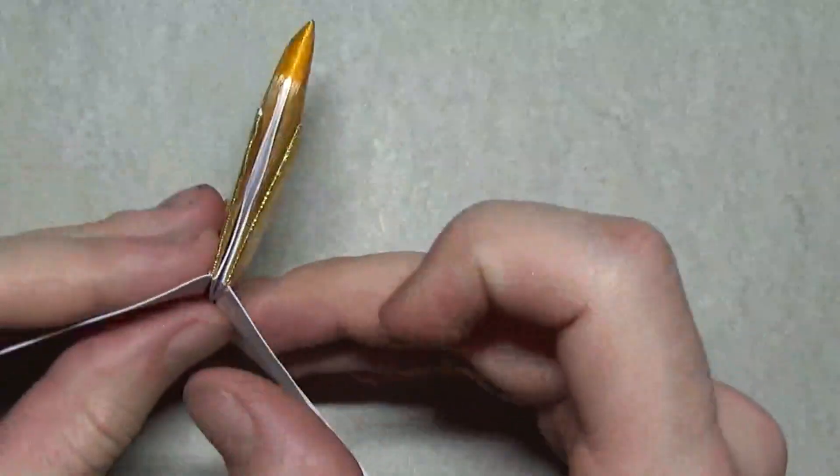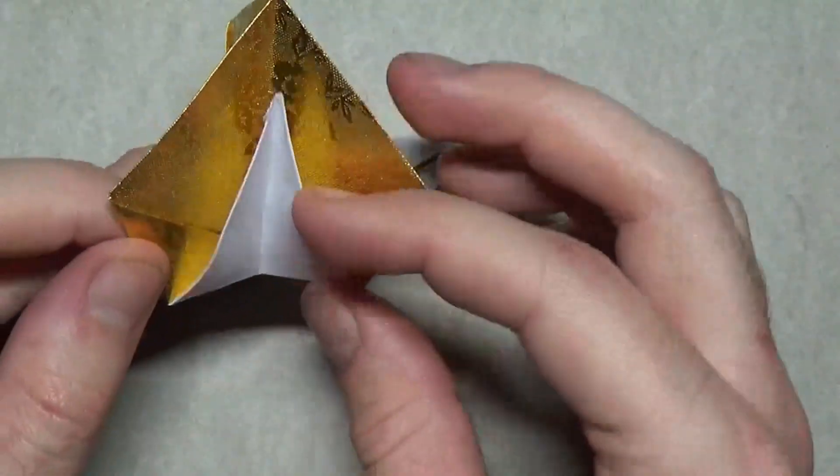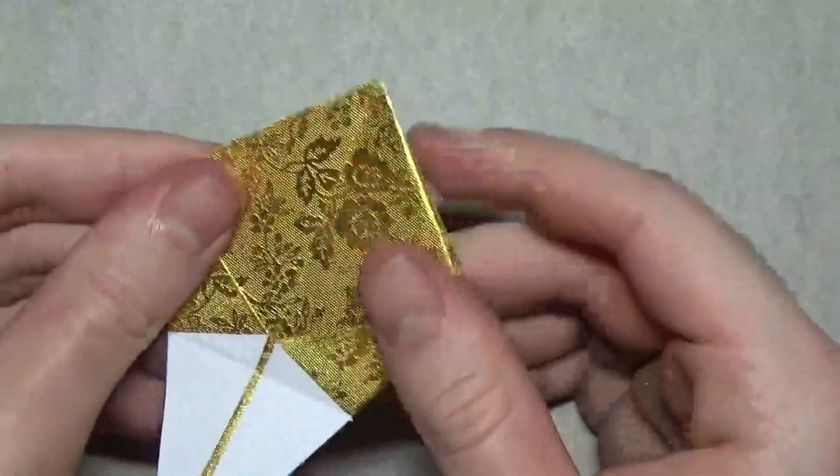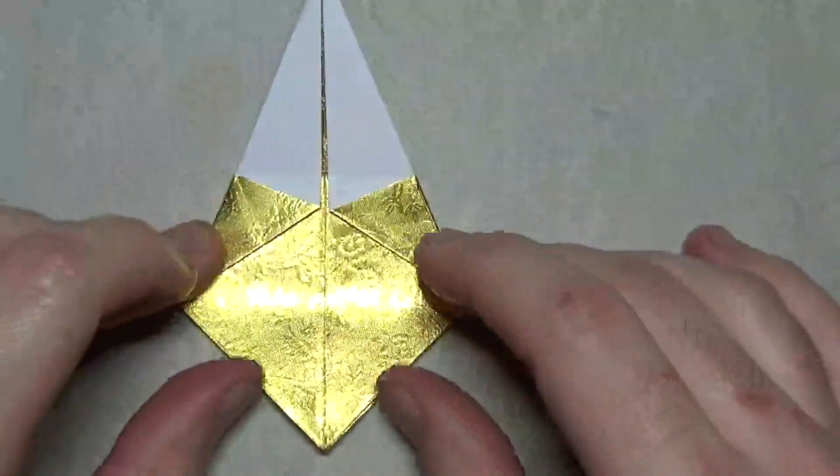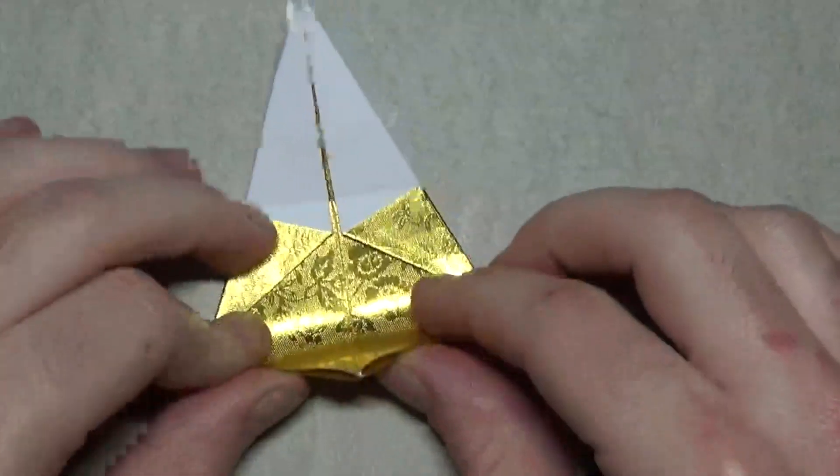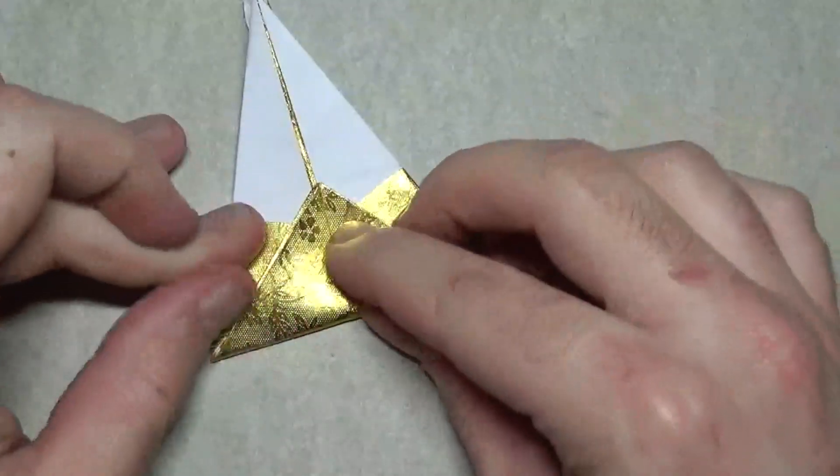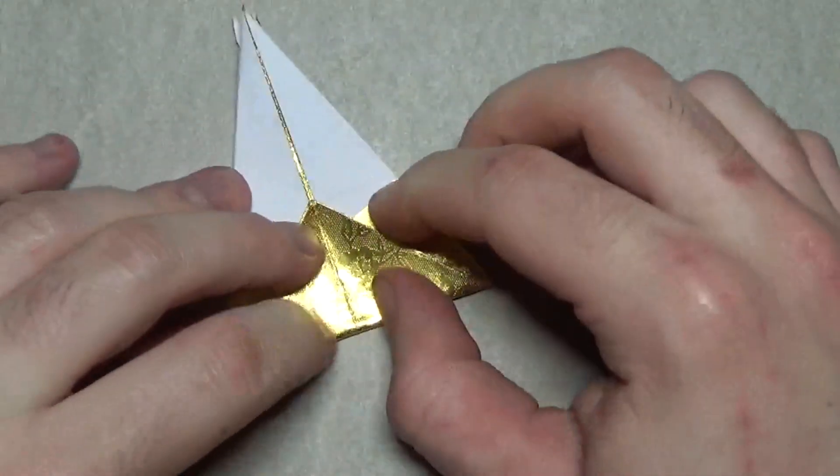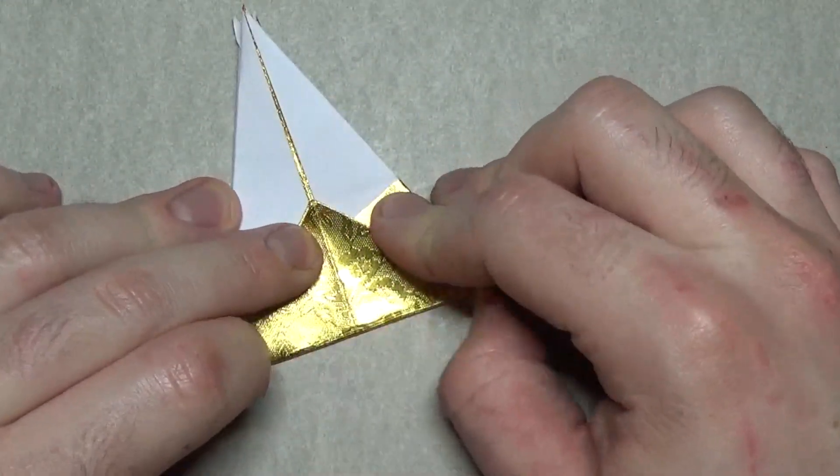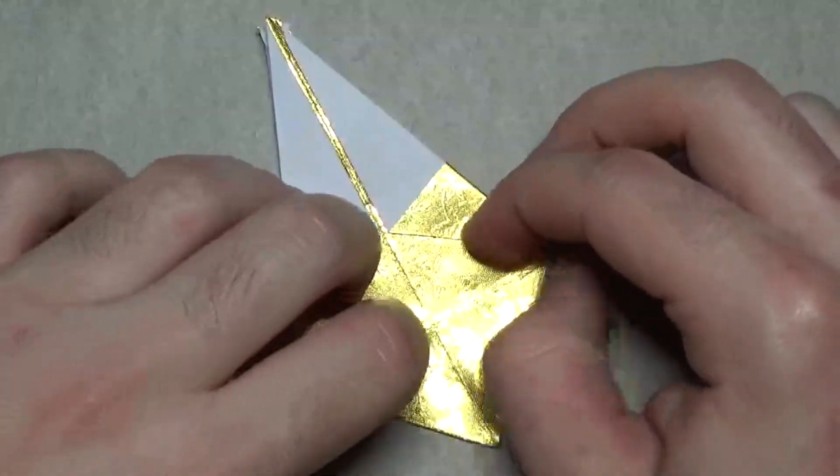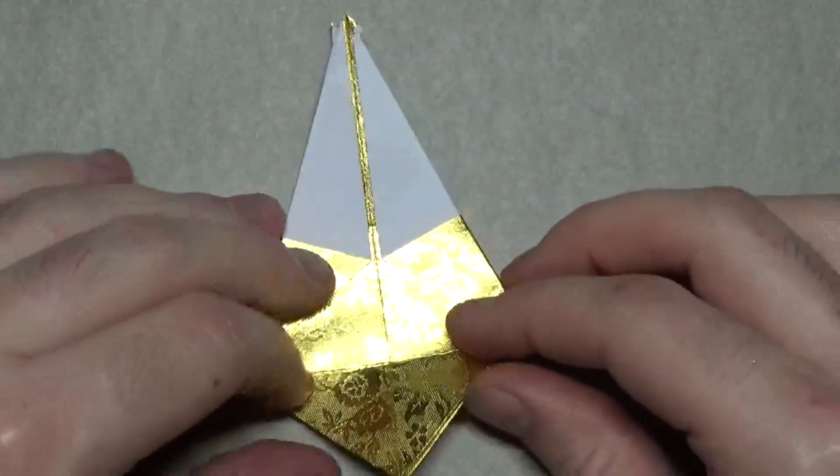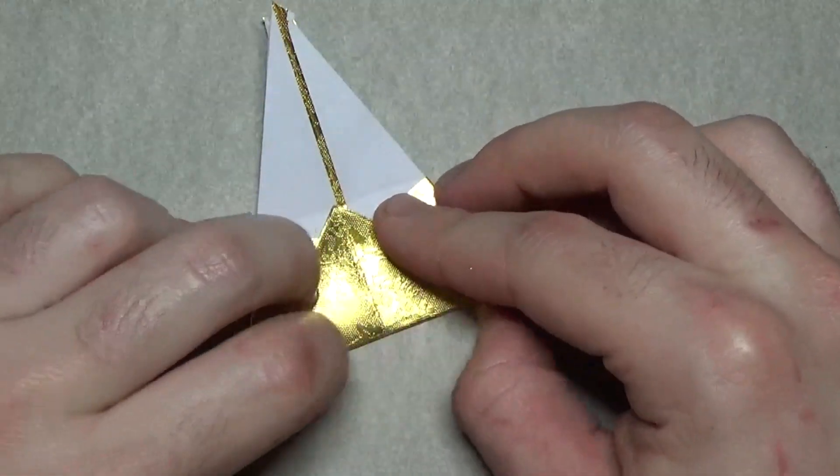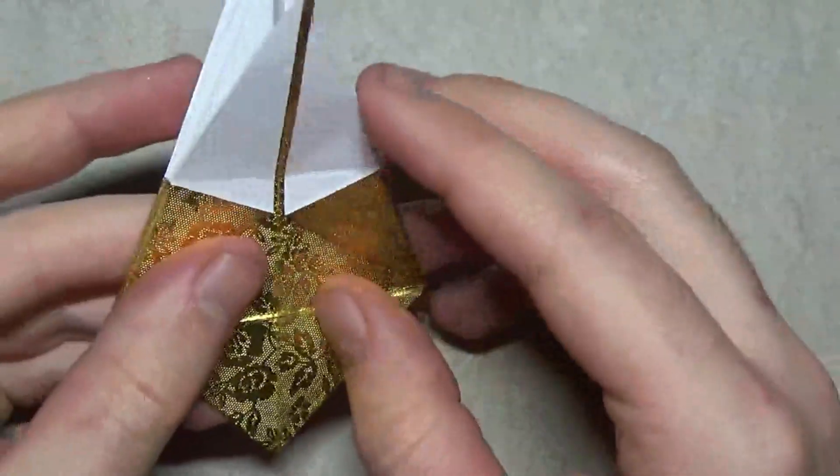Now unfold those flaps for now. There's one step I actually forgot to do. Let's take this point and fold it in between these two points. Make sure that the middle aligns at the middle line. Unfold and let's turn over and let's just kind of erase that crease and reverse it so it's mountain fold. Now let's refold these flaps.